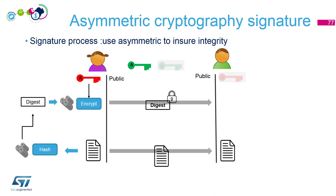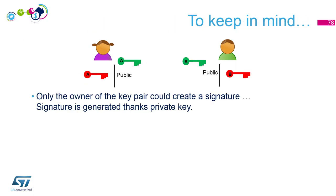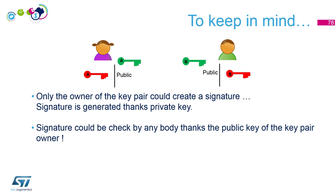Alice encrypts the digest with her private key — this is the signature. She sends the message and the signature to Bob. Bob hashes the received data to get a digest, then decrypts the signature with Alice's public key to recover the original digest, and compares them. Always remember: the private key generates a signature, and a signature can be checked with the public key — meaning anybody can check a signature. Only the owner of the private key can generate a signature, and anybody can verify it using the public key.